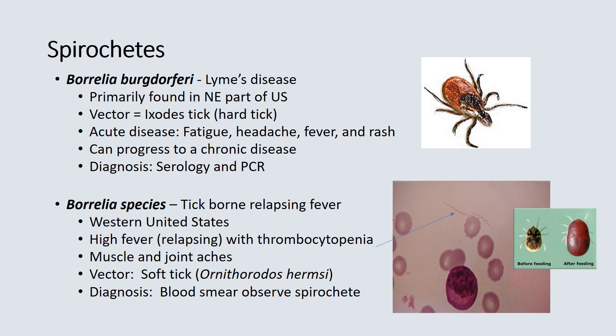Borrelia burgdorferi is caused by a spirochete and is the cause of Lyme disease. It is primarily found in the northeastern United States, transmitted by the Ixodes (hard) tick. It causes an acute disease of fatigue, headache, fever, and rash, which can progress to chronic disease. Diagnosis is by serology and PCR. Other Borrelia species can cause tick-borne relapsing fever — a very high relapsing fever with thrombocytopenia and muscle and joint aches. The vector is the soft tick, and spirochetes can be observed in the blood film.